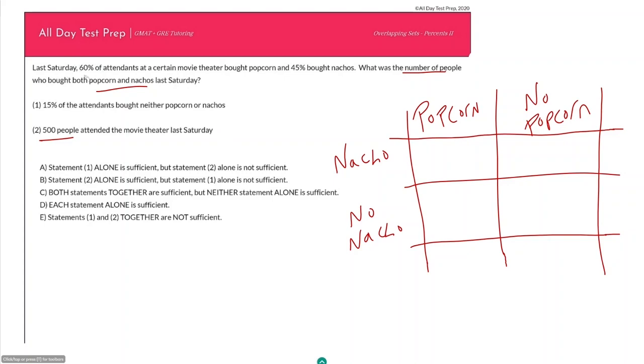So here I'm going to start filling in. We can't just put in 60 and 45 into our boxes. Last Saturday 60 percent of attendance at a certain movie theater bought popcorn, so what that means is we have some number of total people, say T, who attended our movie theater. 60 percent of them, so that is 0.6T got popcorn, and if 60% bought popcorn, 40% did not get popcorn, so that's 0.4T.